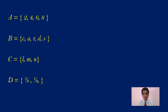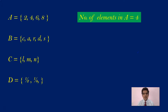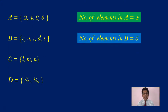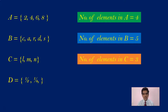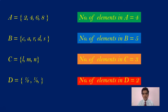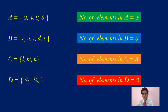Now tell me, what is the number of elements in A? How many elements are there in A? There are actually 4. And what is the number of elements in B? We have 5 elements in B. And what is the number of elements in C? There are actually 3. And finally, what is the number of elements in D? 2. So just by looking at the set itself, by counting the number of elements, we can tell what is the number of elements in that particular set.